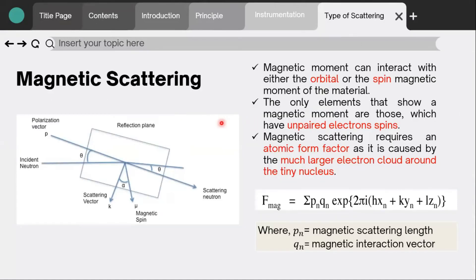The next one is magnetic scattering. As previously mentioned, one of the greatest features about neutron diffraction is that the magnetic moment can interact with either the orbital or the spin magnetic moment of the material. Not every single element in the periodic table can exhibit a magnetic moment. The only elements that show a magnetic moment are those which have unpaired electron spins.